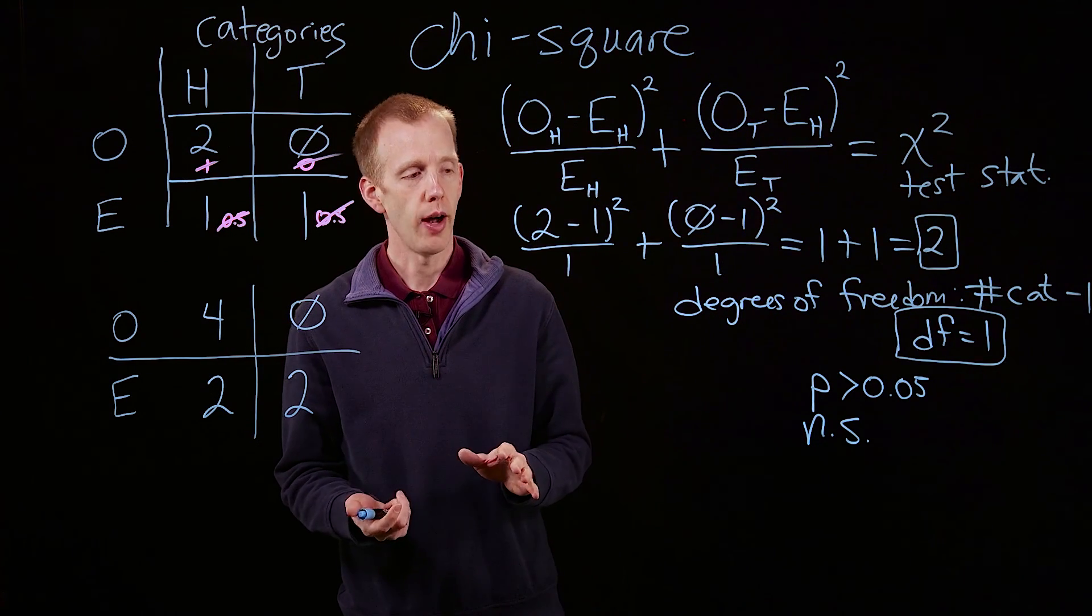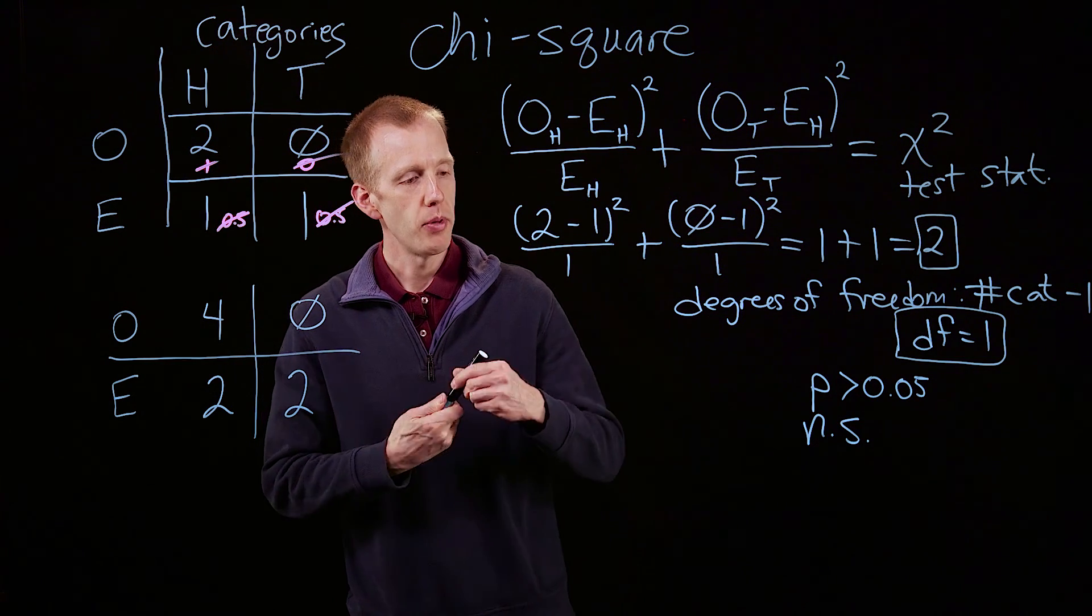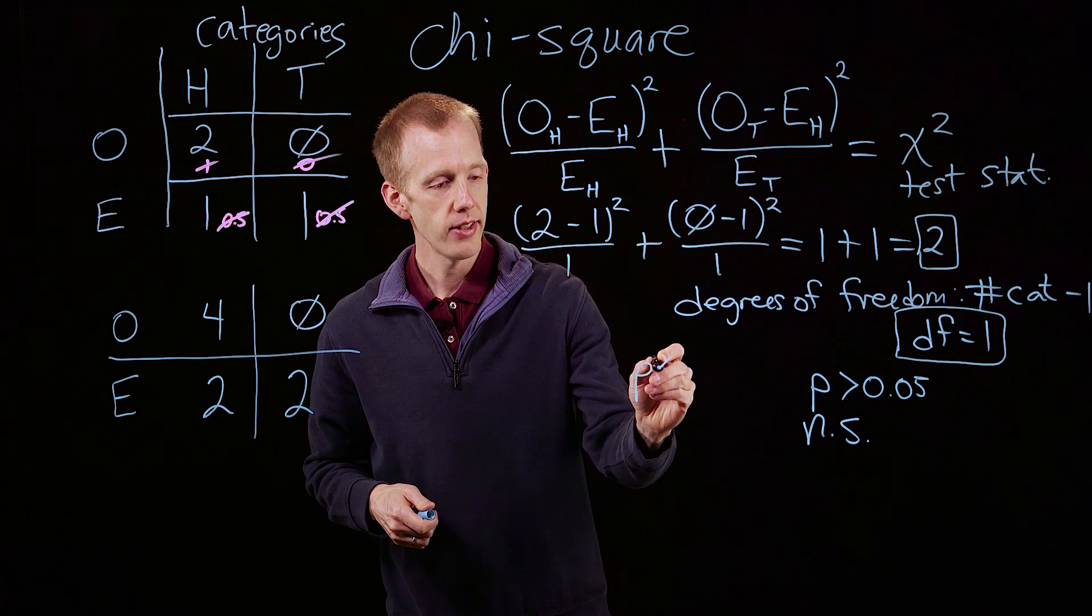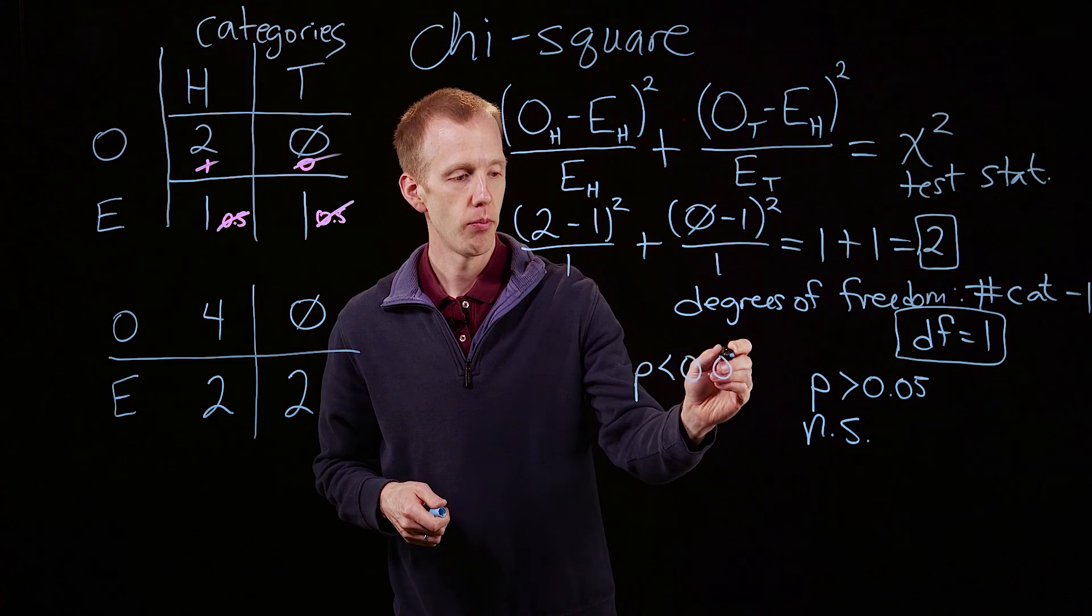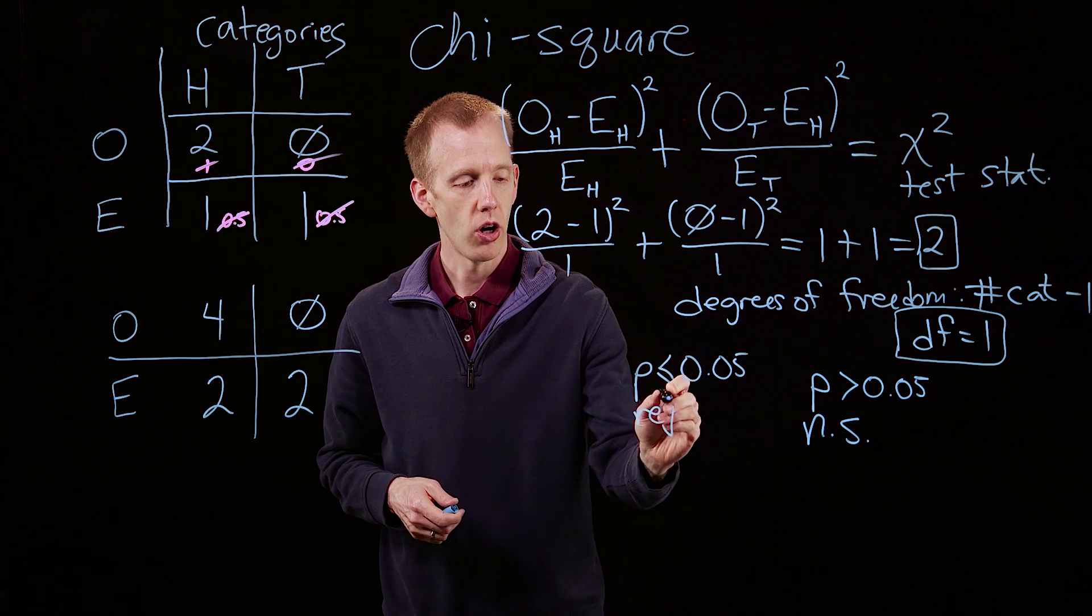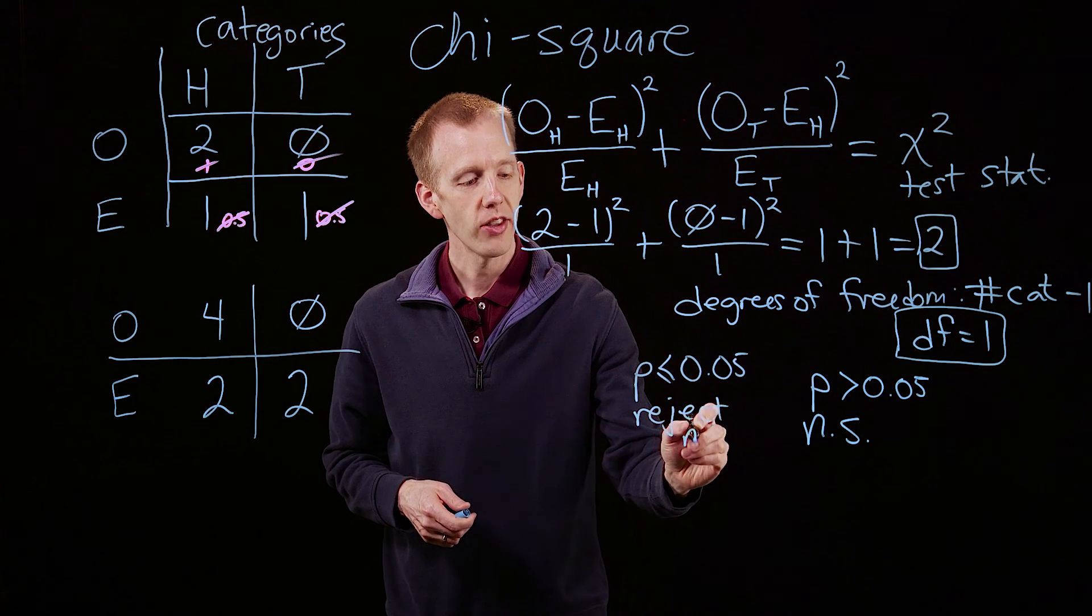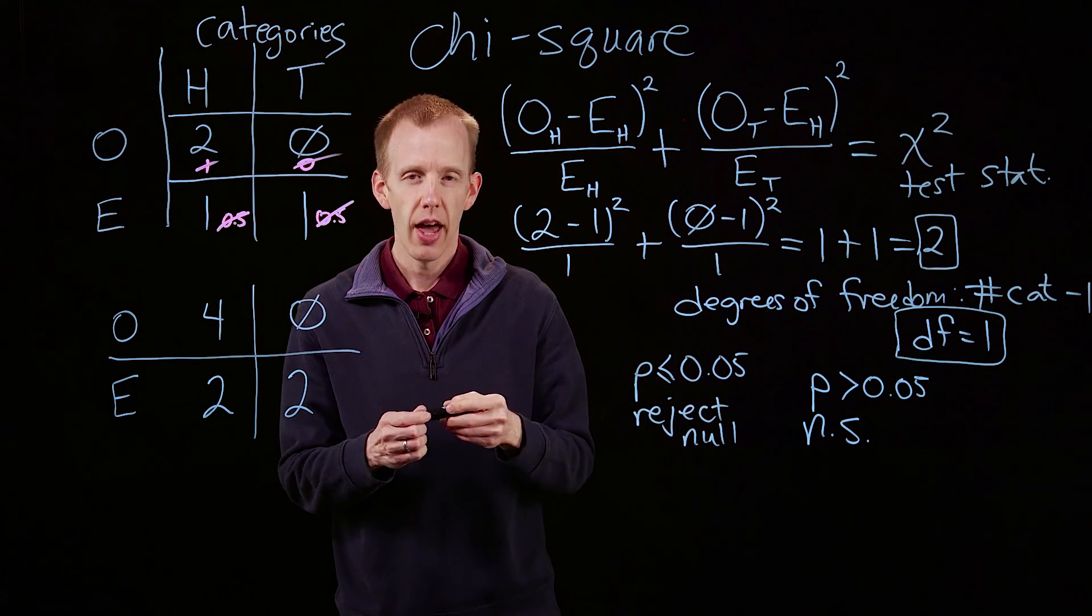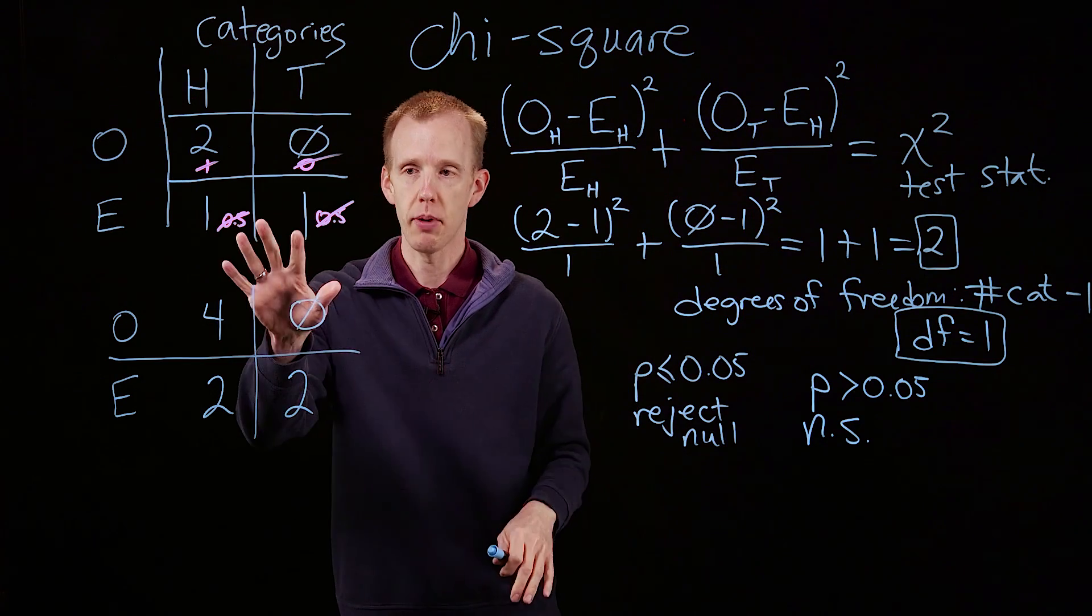There are a couple of points to wrap up. First, when the p-value is less than or equal to 0.05, that's when we do something called rejecting the null hypothesis. And the null hypothesis is just our expectation, our guess.